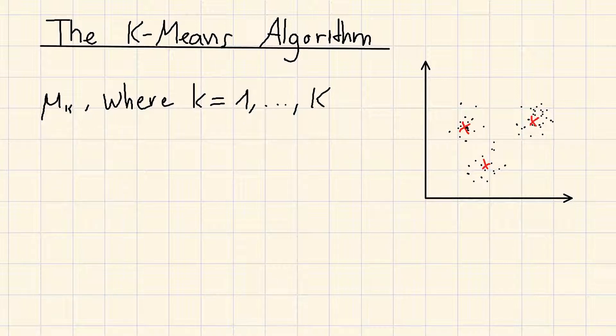Now, for each data point xn, we introduce a corresponding set of binary indicator variables rnk. rnk is an element of {0,1}, where k goes from 1 to K, describing which of the K clusters the data point xn is assigned to.